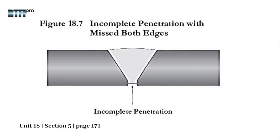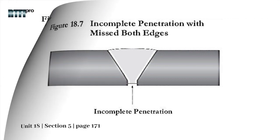Figure 18.7 shows a schematic of an incomplete penetration without a high-low, where both root bases may be inadequately filled at the inside surface.